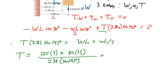Solving for the tension: T equals 120 newtons times 3 meters, plus 80 newtons times 1.5 meters, divided by 2.38 times sine of 145 degrees. Working that out: 120 times 3 is 360, plus 80 times 1.5 which is 120, giving 480, divided by 2.38 divided by sine of 145 degrees, gives us 352 newtons. So the tension equals 352 newtons, and that will keep the boom in horizontal static equilibrium.